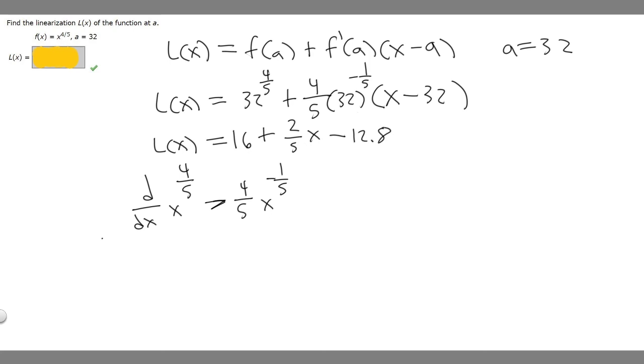So we've got 16 plus 2/5x minus 12.8. And all we've got to do is combine like terms, so combine our 16 and our minus 12.8. And we're going to get that L of x is equal to 2/5x, 16 minus 12.8 is 3.2. So our final answer is going to be L of x equals 2/5x plus 3.2.